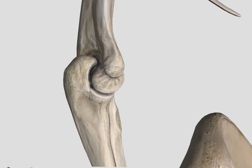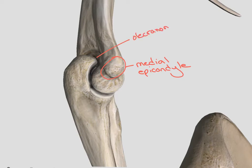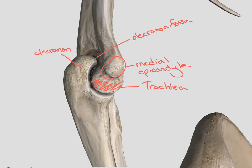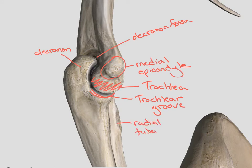And when we look from the medial side, we can see our medial epicondyle. We know that this is the medial side because of the ulna being closest to us. Here we can nicely see that olecranon fossa, as well as the olecranon process. We can see that articular surface of our humerus — we call this the trochlea. And then the groove underneath that is our trochlear groove. Here we can also see our radial tuberosity, as well as our ulnar tuberosity.